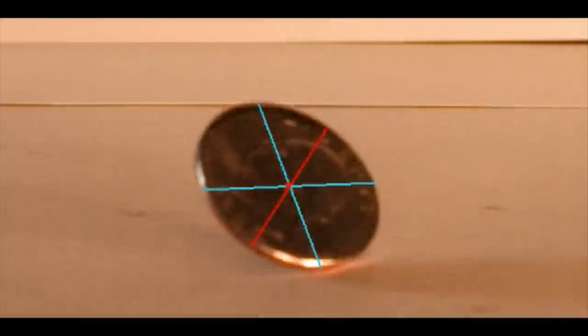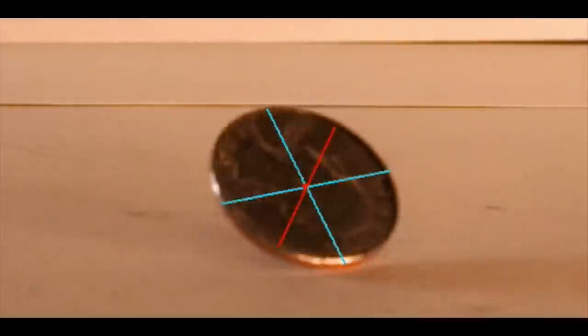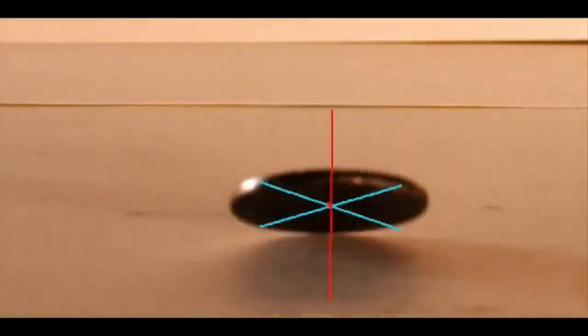The parameters of the detected ellipse were smoothed and overlaid on the original video to show how the location and rotation of the coin can be tracked.